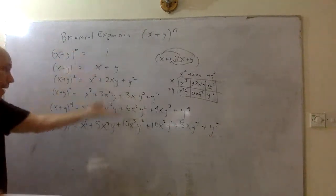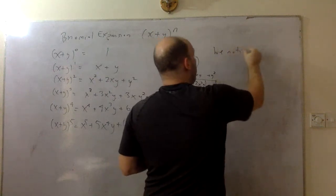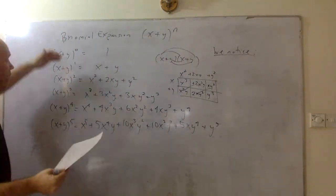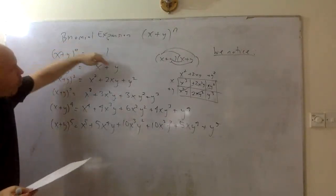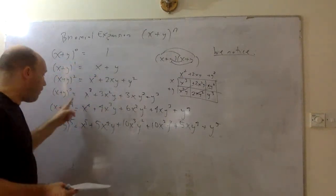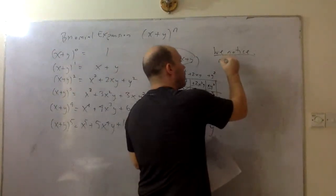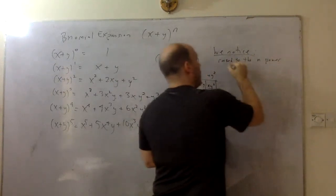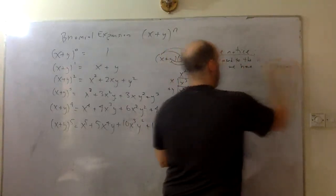So let's take a look at what we notice. We notice that if a binomial is raised to the nth power, there are n plus one terms. So if it's raised to the first power, we have two terms. If it's raised to the fourth power, we have five terms. If it's to the fifth power, we have six terms. So if it's raised to the nth power, we have n plus one terms. That's the first thing we notice.